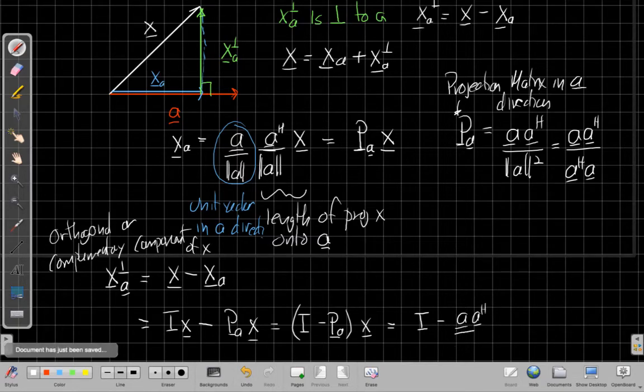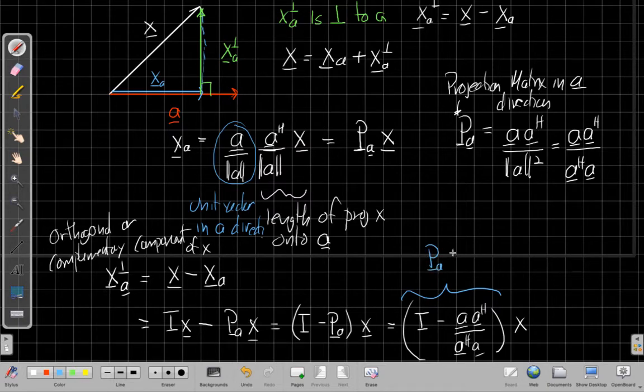And so I can also then just fill this in. I can say, well, I have I minus that projection matrix is A, A Hermitian divided by A Hermitian A, all of that times x.